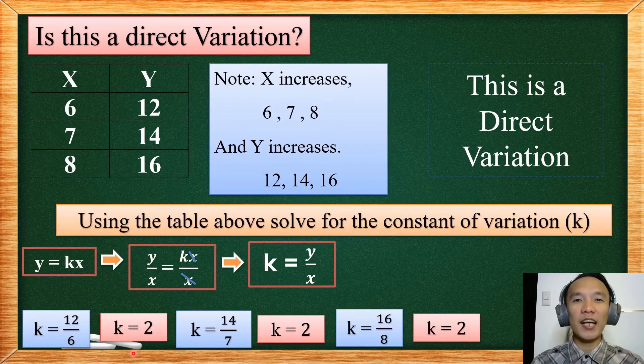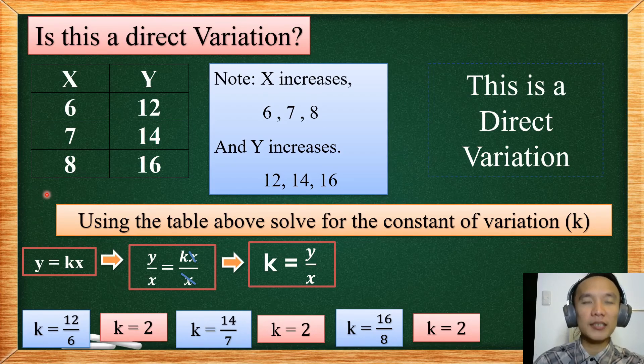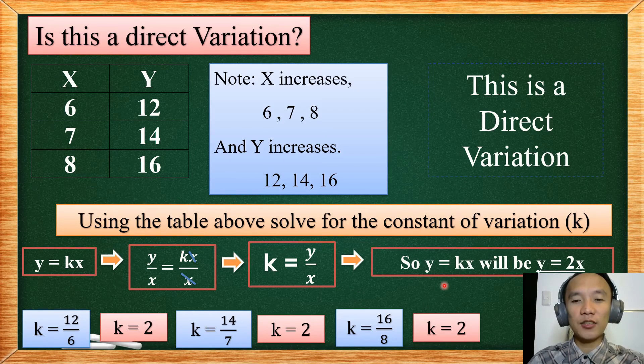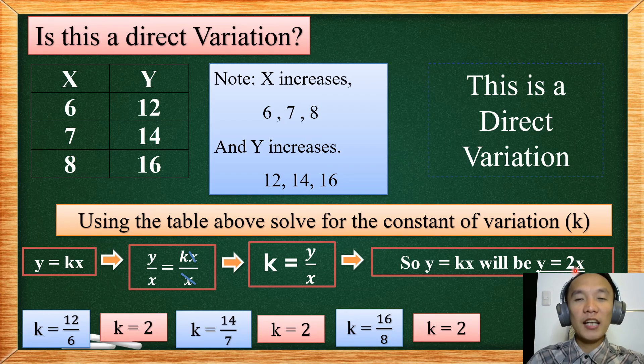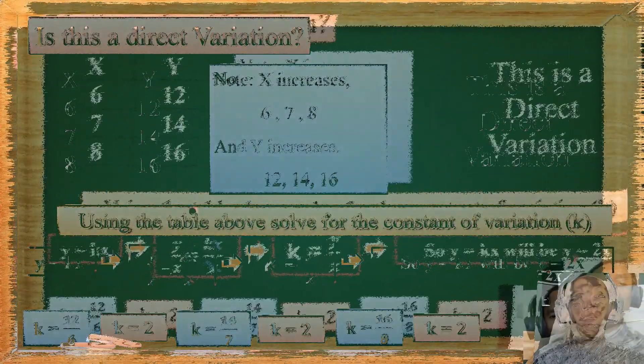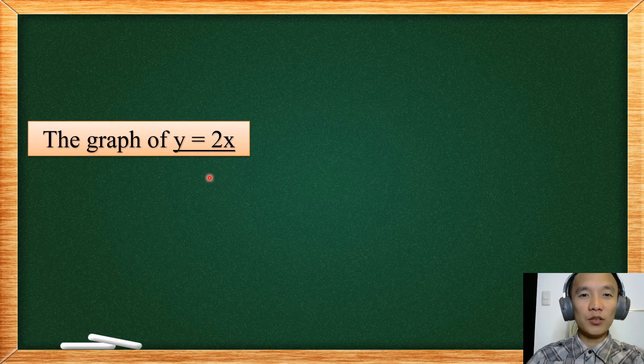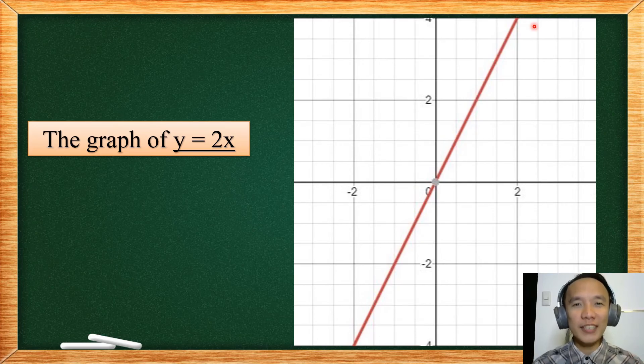So the purpose of finding our constant of variation is for us to be able to solve what if we are given the value of our X to be 100 and we are going to find the value of our Y. So we can just use this equation. From Y equal to KX, so your K will just be replaced by 2. So this is now your general equation. So whatever value you put to your X, you will be able to solve your Y. That's going to graph your Y equal to 2X. So you will have a slant straight line. A direct variation will always have a straight slanting line.